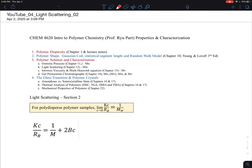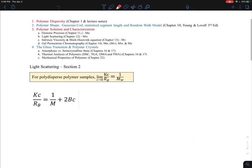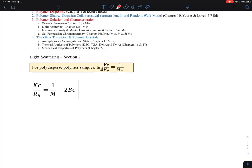This is section 2 on light scattering. Here I'm going to focus on how we can prove that for polydisperse polymer samples, the light scattering measurement allows us to measure the weight-average molecular weight.